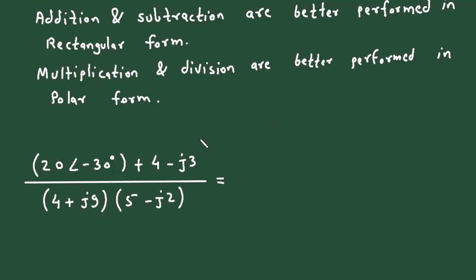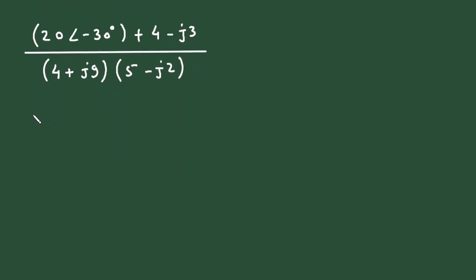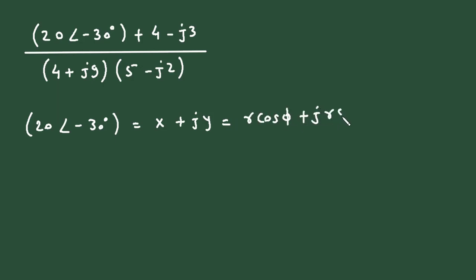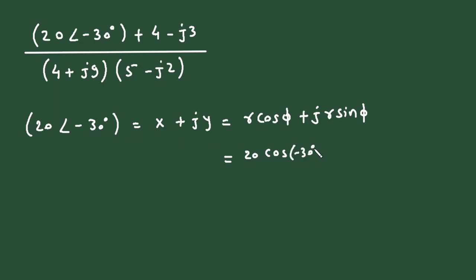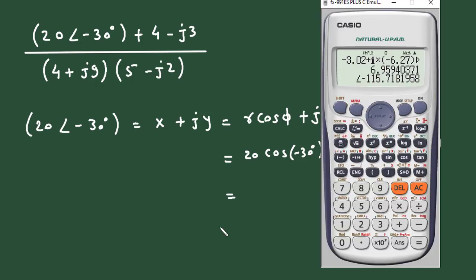Now when we convert this polar form to rectangular form, step by step: 20 at an angle minus 30 degrees equals x + jy, that means r·cosφ + j·r·sinφ. The value of r is 20, so it is 20·cos(−30°) + j·20·sin(−30°).